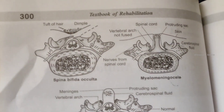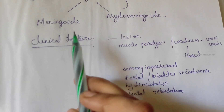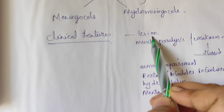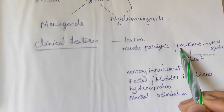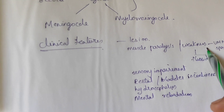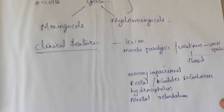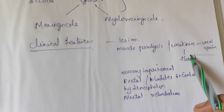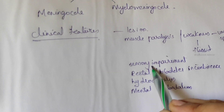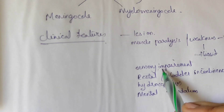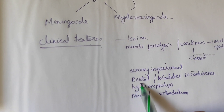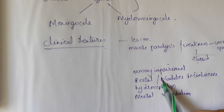Now the clinical features: lesions over the vertebral defect on the back; muscle paralysis and weakness depending on the level and extent of the lesion. Upper motor neuron involvement causes spastic type, while lower motor neuron involvement causes flaccid type of paralysis. Sensory impairment also depends on the extent and level of lesion.